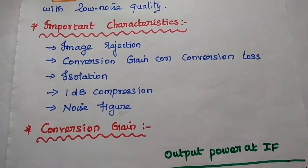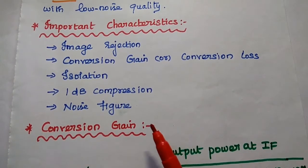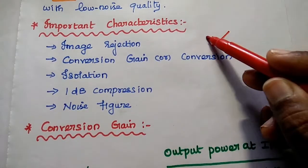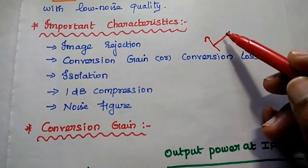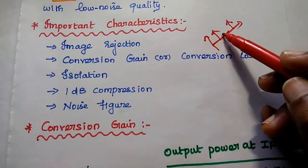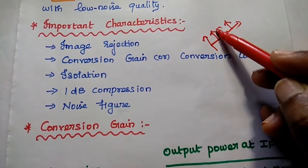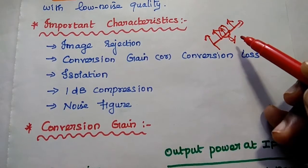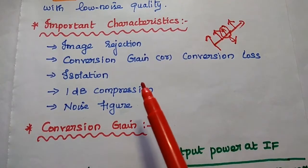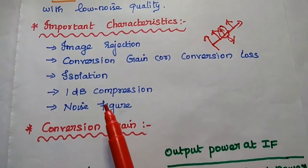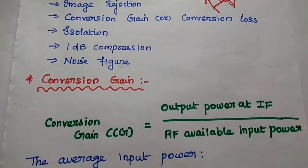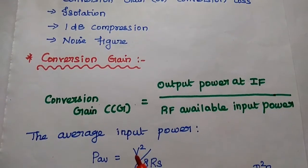Next are the important characteristics of the mixer. The first is image rejection — the image frequency is a very important concept. When we have the mixer output, we have the high-frequency signal and the difference frequency signal, with the image frequency signal in between that must be rejected using filters. Other parameters are conversion gain or conversion loss, isolation, 1 dB compression, and noise figure — all define the performance of the mixer.